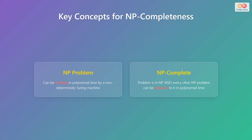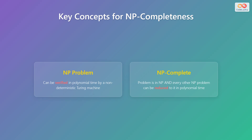Before diving deeper, let's clarify some key concepts regarding NP-completeness. First, a problem is in NP, which stands for non-deterministic polynomial time, if a given solution can be verified in polynomial time by a non-deterministic Turing machine. Second, a problem is NP-complete if it is in NP and every other problem in NP can be reduced to it in polynomial time. Essentially, this means that if you find a polynomial time solution to an NP-complete problem, you found a polynomial time solution to every problem in NP.